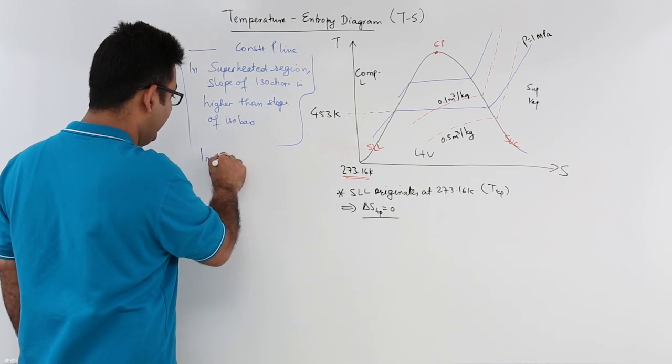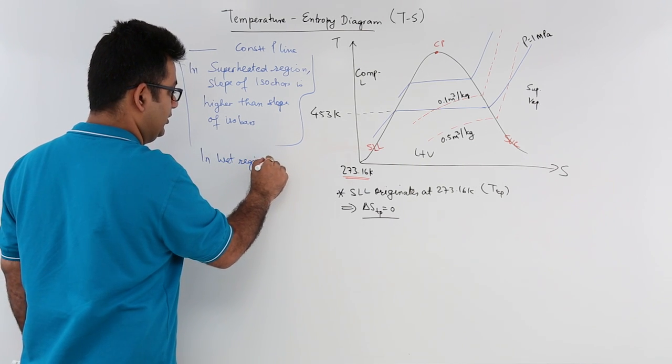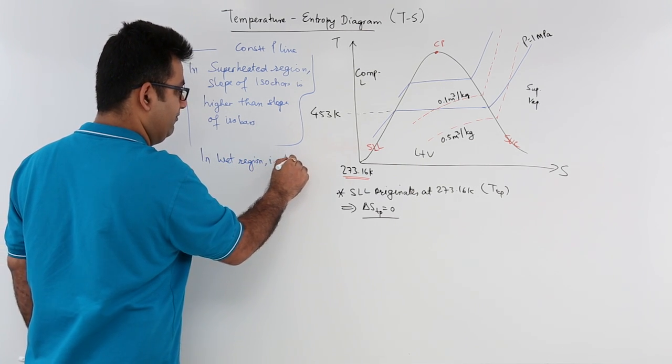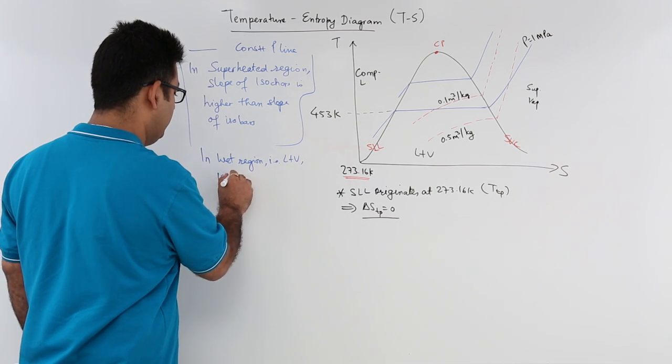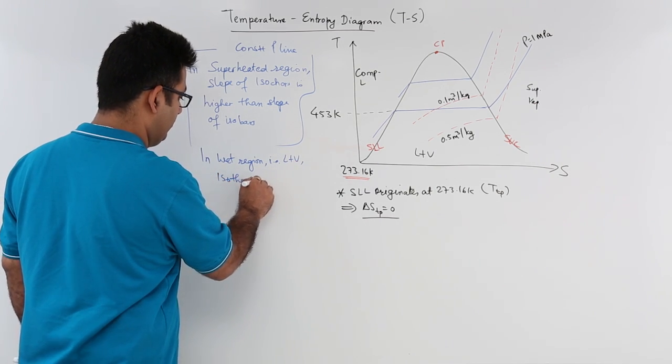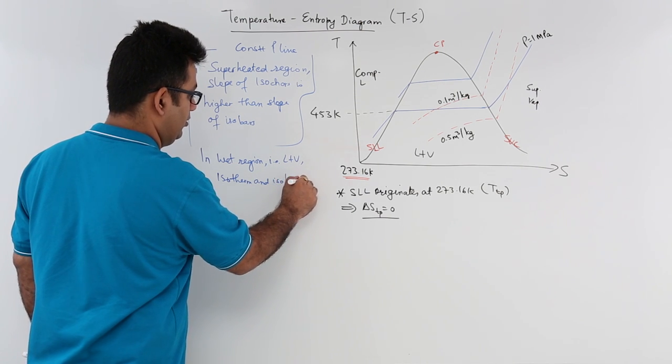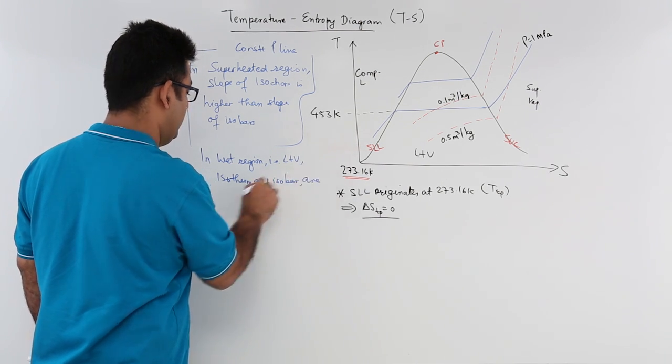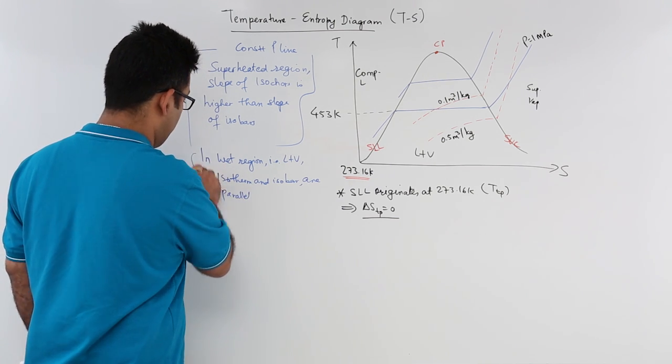And in the wet region, that is liquid plus vapor, the isotherm and the isobar are parallel to each other.